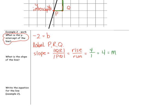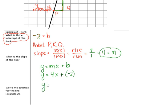Next, the slope-intercept form: y equals mx plus b. We're going to take the m out and put the slope in. So, we've got y equals 4x, and we're going to take the b out and put in the y-intercept, which is negative 2. Instead of writing adding a negative, we'll change that to simple subtraction. So, the equation of the line is y equals 4x minus 2. This is the slope-intercept form for the equation.